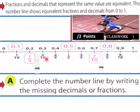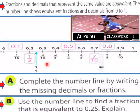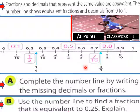One fifth for 0.2, and 7 over 10 for 0.7. Use the number line to find a fraction equivalent to 0.25 — that would be one fourth. And for 0.75, that would be three fourths right here.